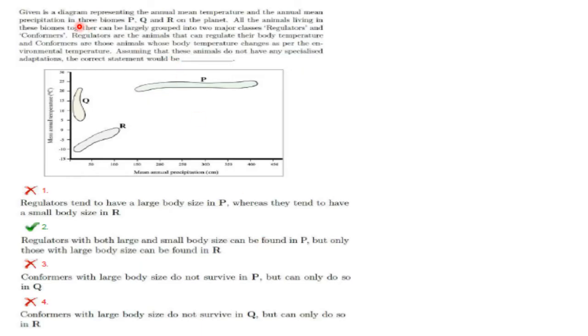Given is a diagram representing the annual mean temperature and annual mean precipitation in three biomes P, Q, and R on a planet. All the animals living in these biomes can be largely grouped into two major classes: regulators and conformers. Regulators are animals that can regulate their body temperature, and conformers are those whose body temperature changes with the environmental temperature. Assuming that each animal does not have any specialized adaptation, the correct statement would be...